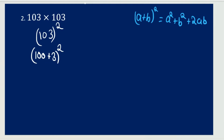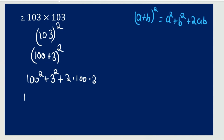So now to solve: 100 plus 3 whole square is just going to equal 100 squared. 100 squared is just going to be 10,000. 3 squared is going to be 9, plus 2 times 100 times 3 is just going to be 600. And now we just got to add. When we add, we would get 10,609. And that's our answer.